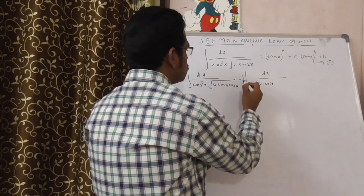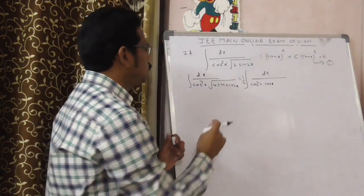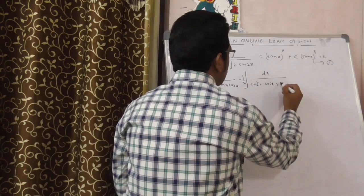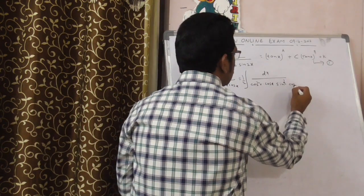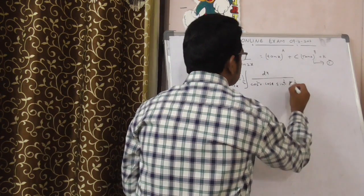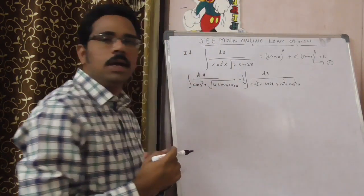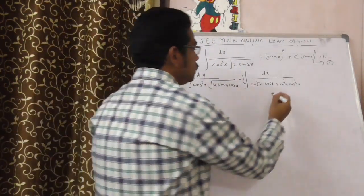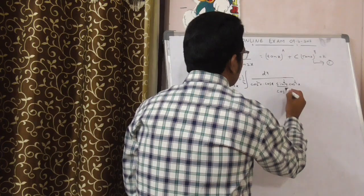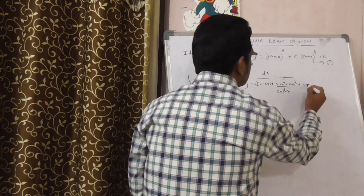I am writing it outside, that is 1 by 2, because 4 is in denominator. Now, this is sin power 1 by 2 x cos power 1 by 2 x. Here you have to do one magic. What is that? Just multiply and divide with cos power 1 by 2 x.